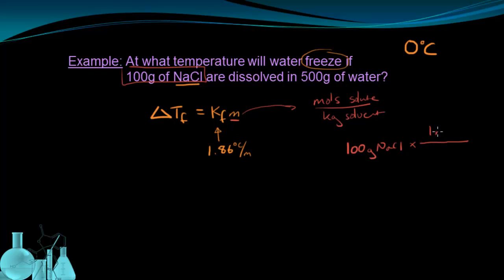So times 1 mole of NaCl over the molecular mass of NaCl, which is 58 grams, is going to give me the moles of NaCl that 100 grams is equal to. And if I solve this, I'm going to see that I have 1.72 moles of NaCl.